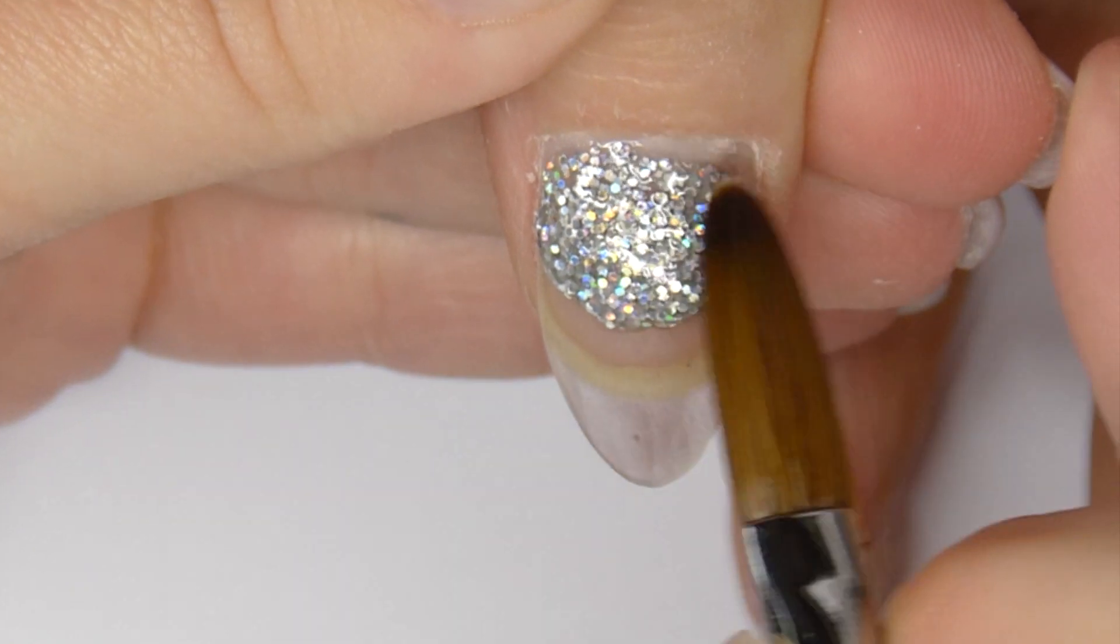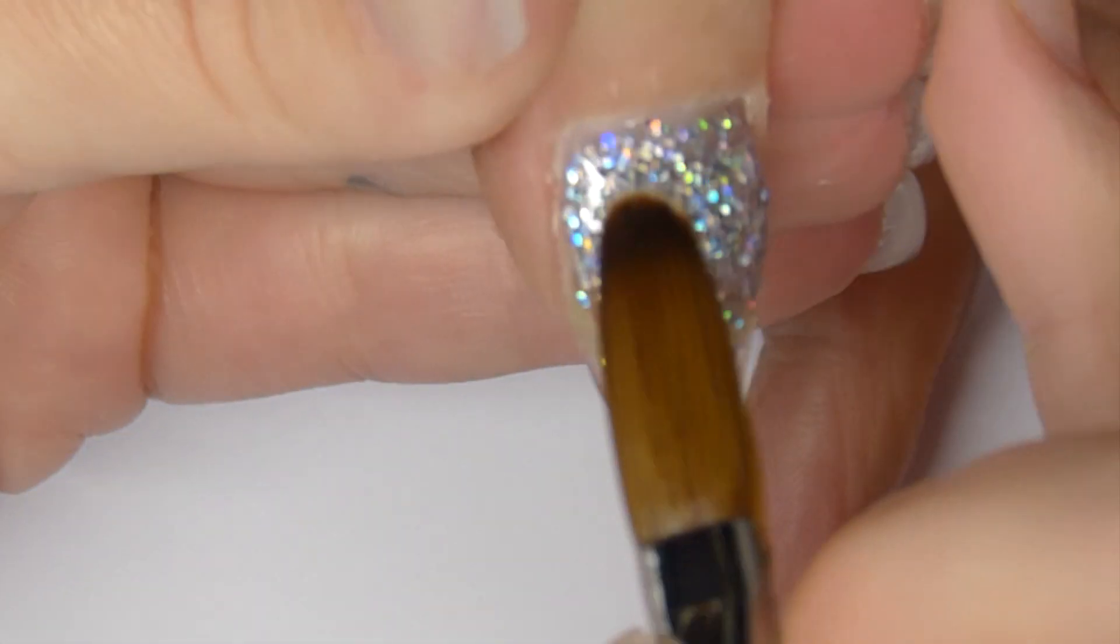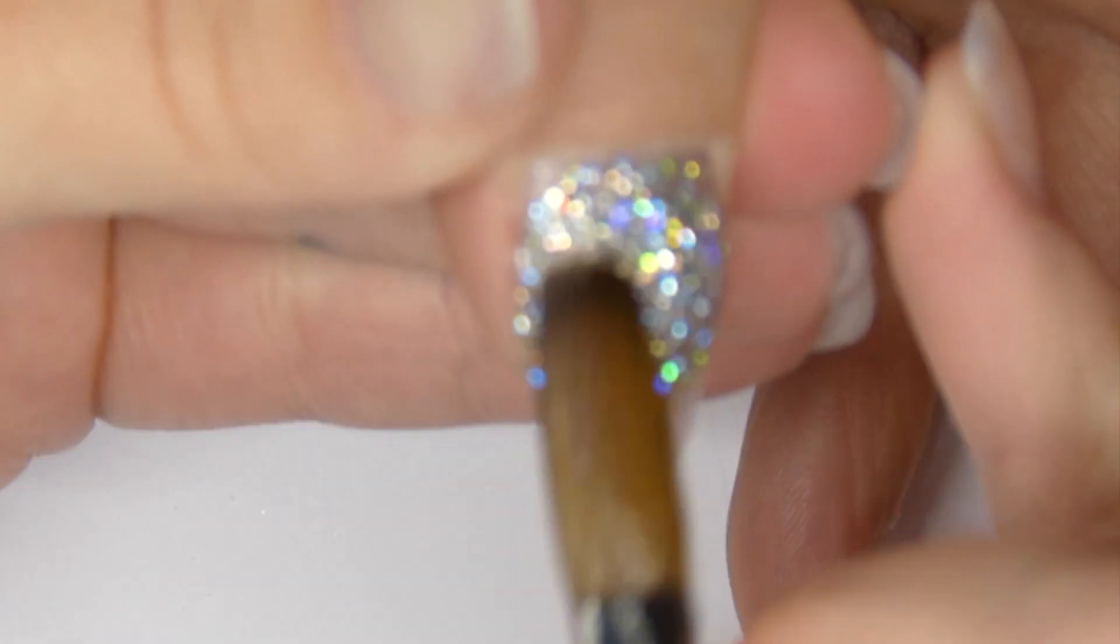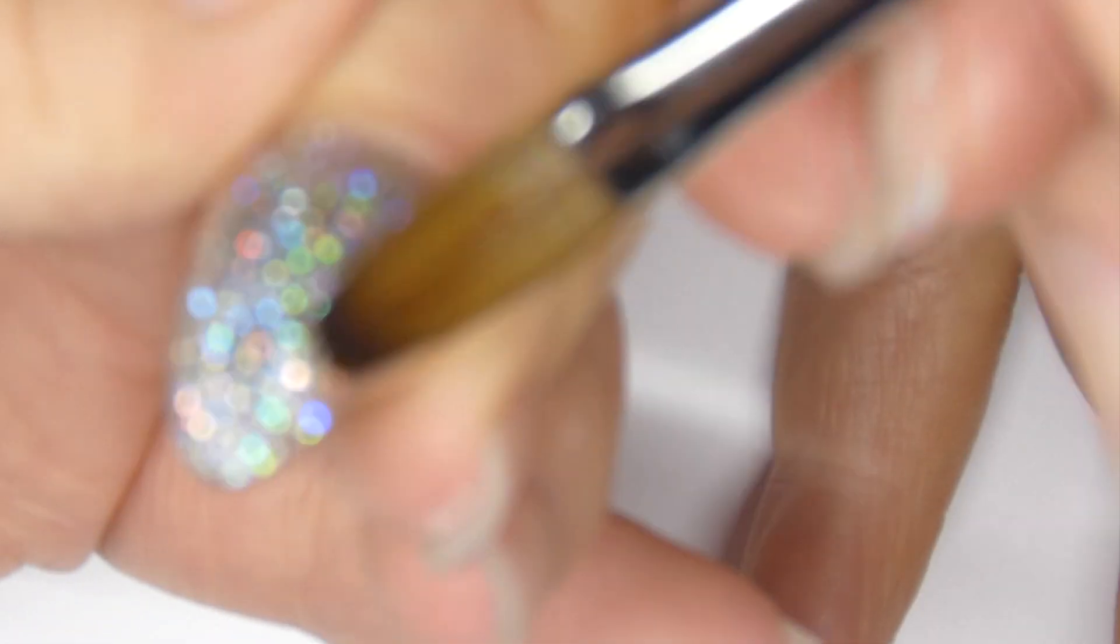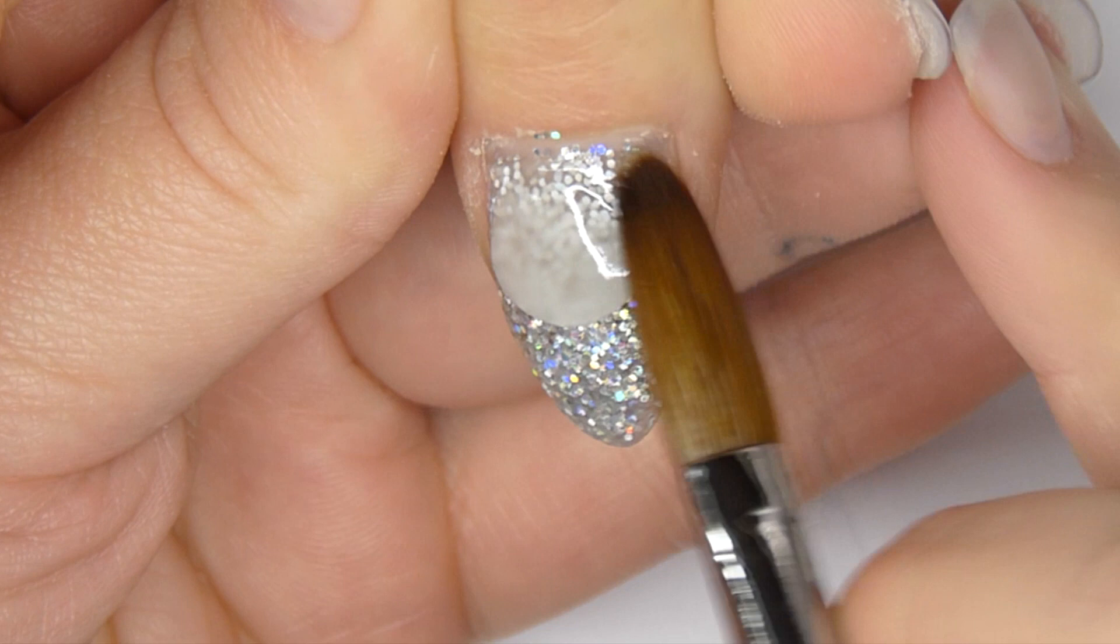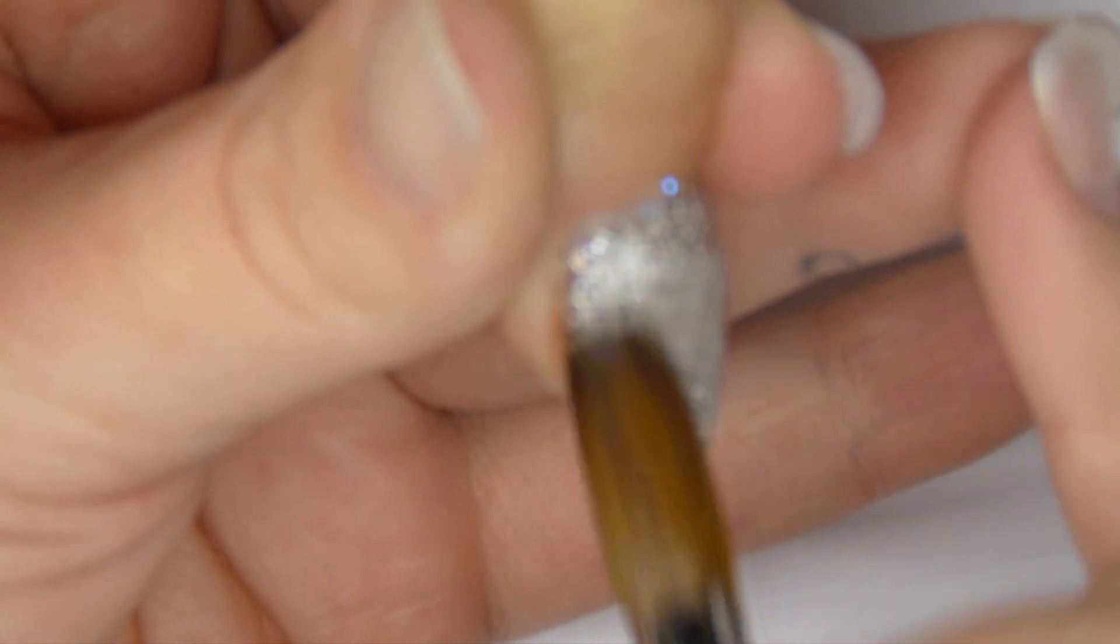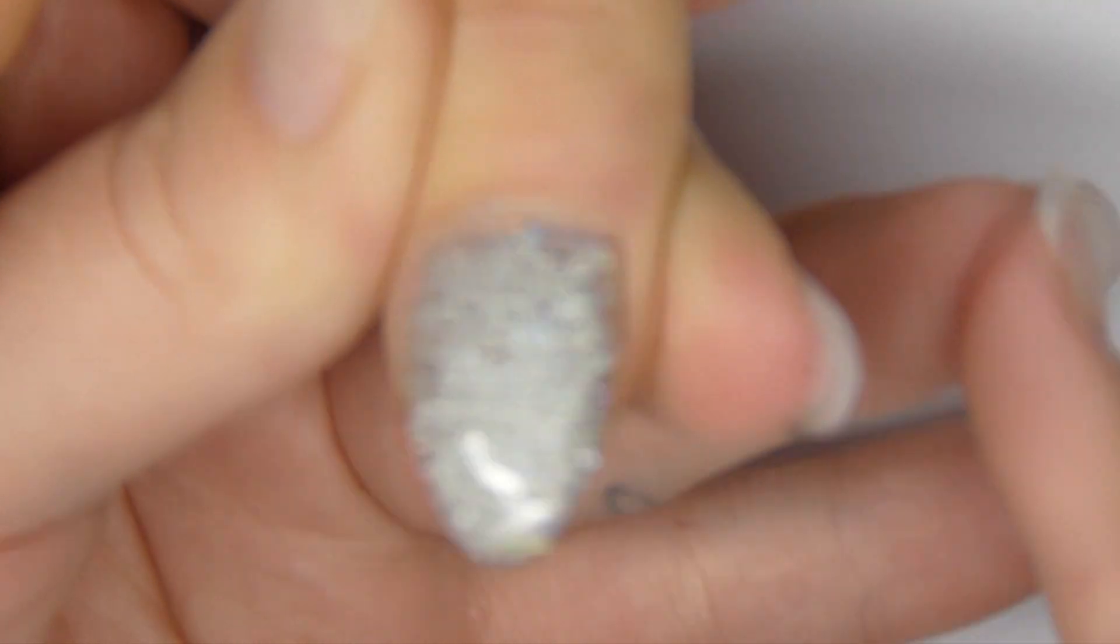And then for the thumb I also used that holographic silver glitter and I'm just going to fast forward into this because you already saw that in the beginning. Then you have to encapsulate it with clear acrylic. If you don't encapsulate you'll file off the glitter, and keep it really thin as well.